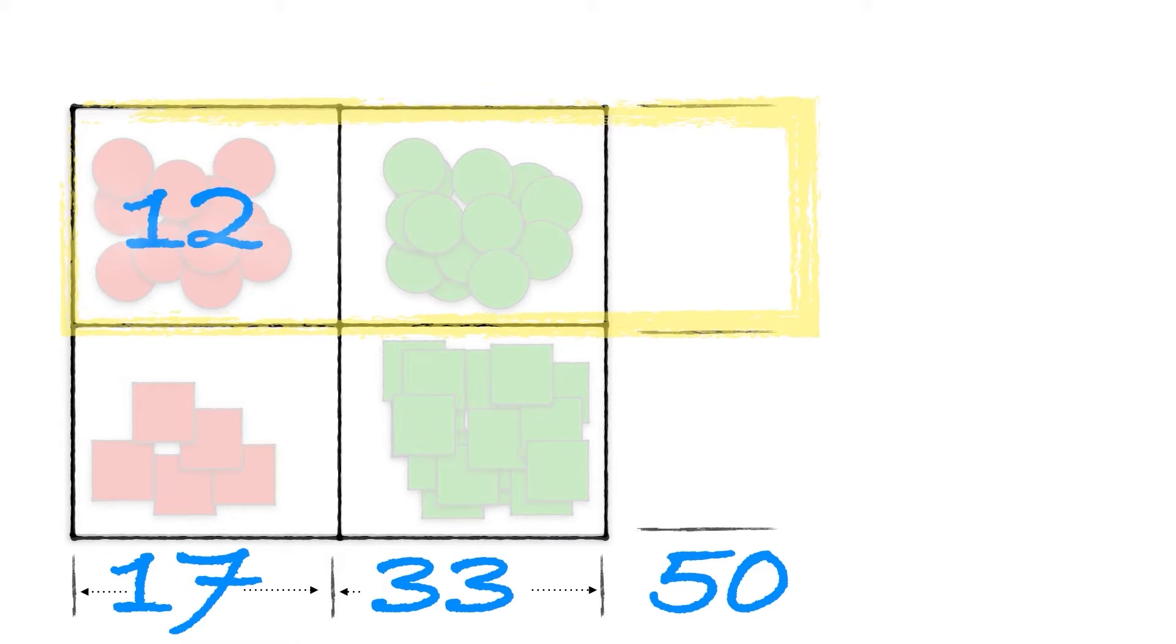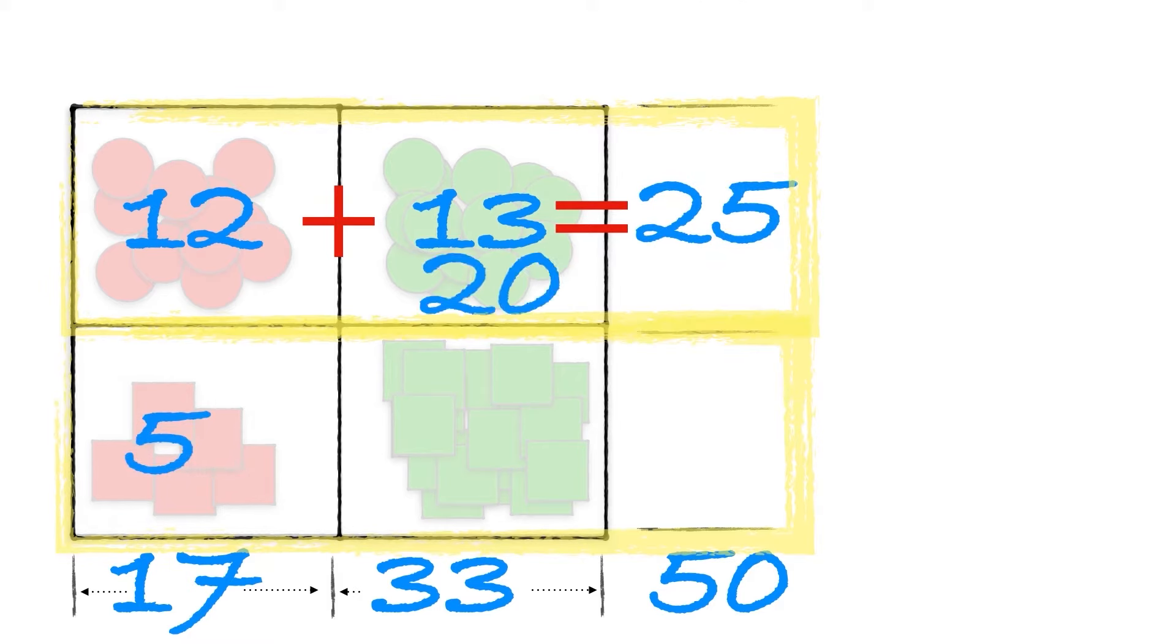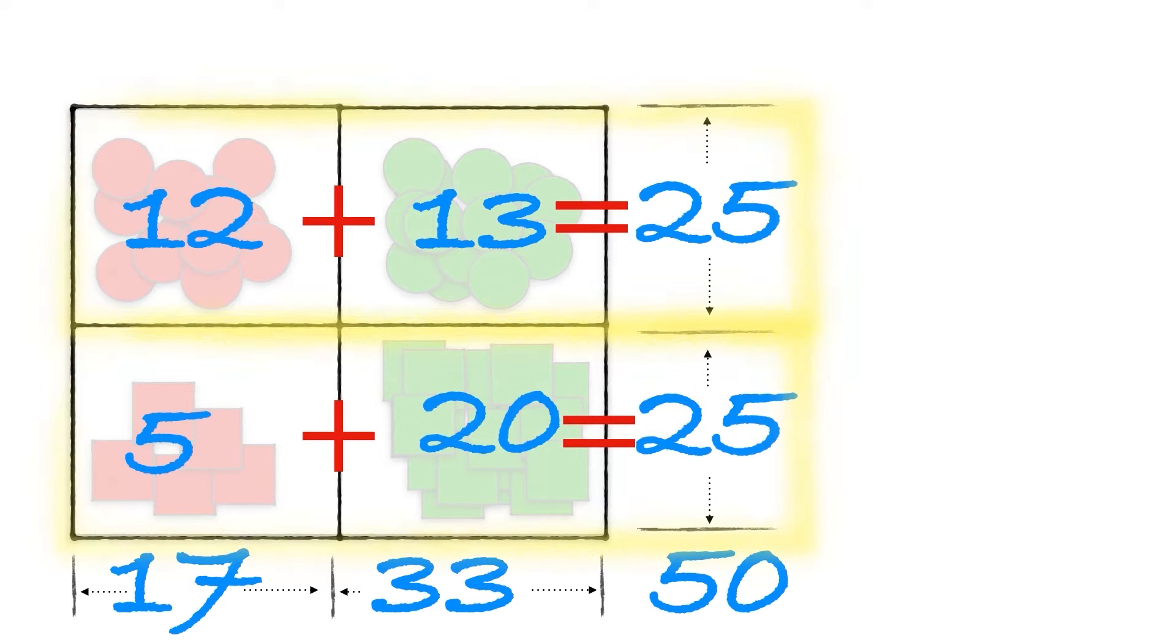So amongst the smokers, the circles, 12 people got sick, 13 people didn't get sick, so giving us a total of 25. And amongst the non-smokers, 5 people got sick, 20 didn't get sick, so again we've got a total of 25.